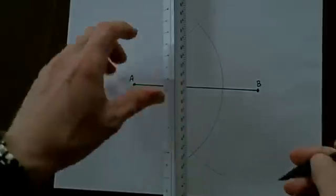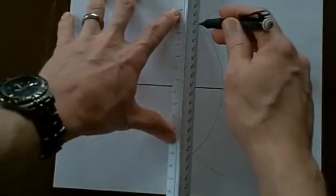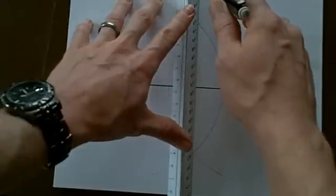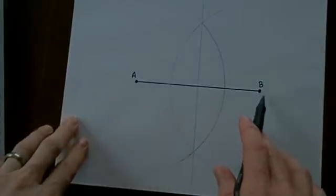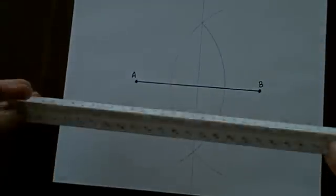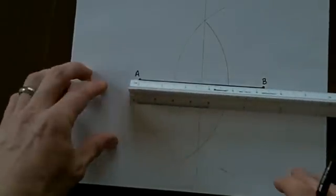And now I take my straight edge, and I'll draw it from this point to that point. And this will be a perfect division in half of this line. We can check using a ruler if we'd like. This line is,